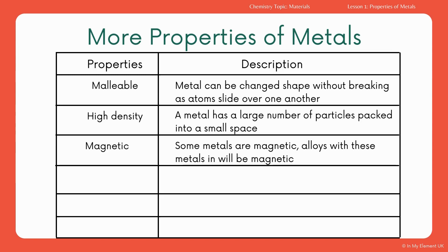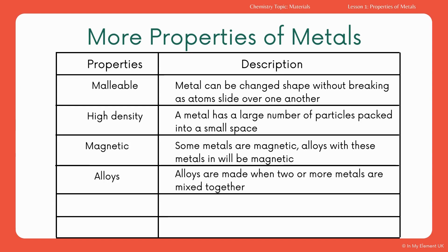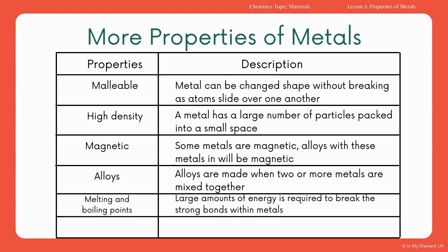Some metals, though not many, are magnetic, and an alloy containing a magnetic material will also be magnetic. An alloy is made when two or more metals are mixed together — for example, a weaker metal can be mixed with a stronger one to get a good combination. Metals also have high melting and boiling points, meaning large amounts of energy are required to break the strong bonds within them. Finally, metals are ductile, meaning they can be made into wires and can be bent and stretched.